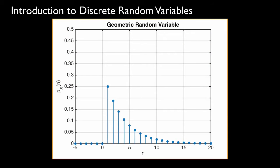Here is what the probability mass function looks like for this example when the probability of seeing heads on any particular toss is equal to one fourth, or 0.25. A random variable with this probability mass function is called a geometric random variable, because of the geometric or exponential decay in the probability mass function.